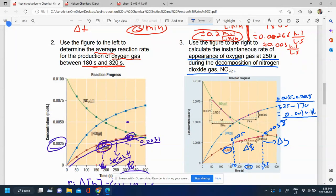325 minus 170 over 155 seconds, which gives us 0.001 divided by that there. So here we get about 6.4 times 10 to the power of negative 6.